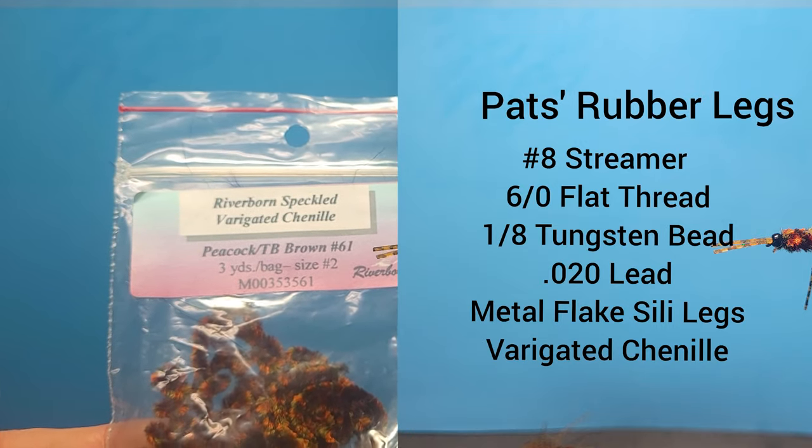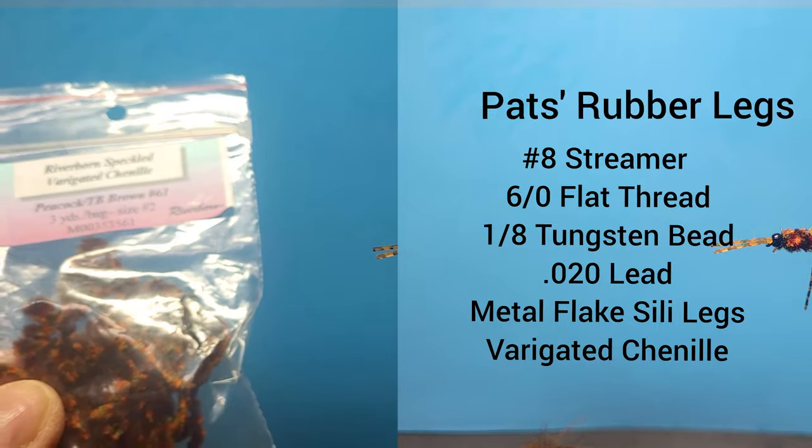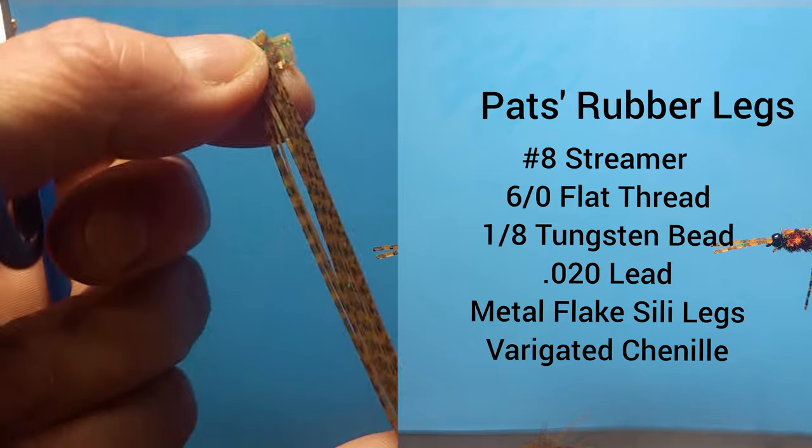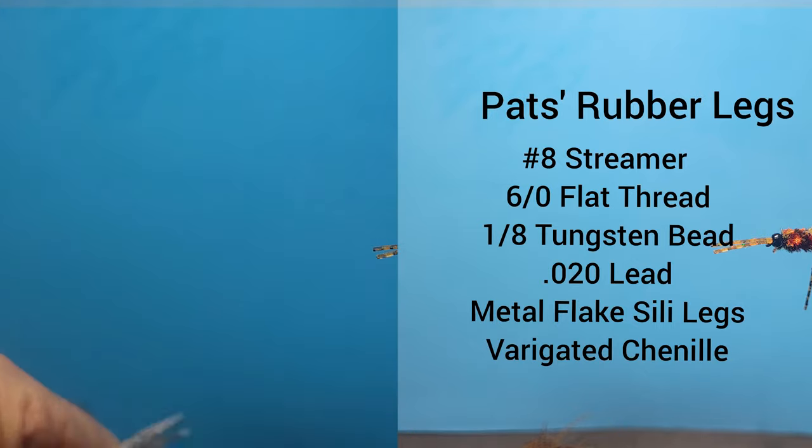The chenille I'm using on here is peacock and brown. You can use brown, black, different colors are very good on this. The legs I'll be using here are some speckled silly legs with a little metal flake in them. Use whatever legs you like. Some guys use the floss, these are nice legs to use.